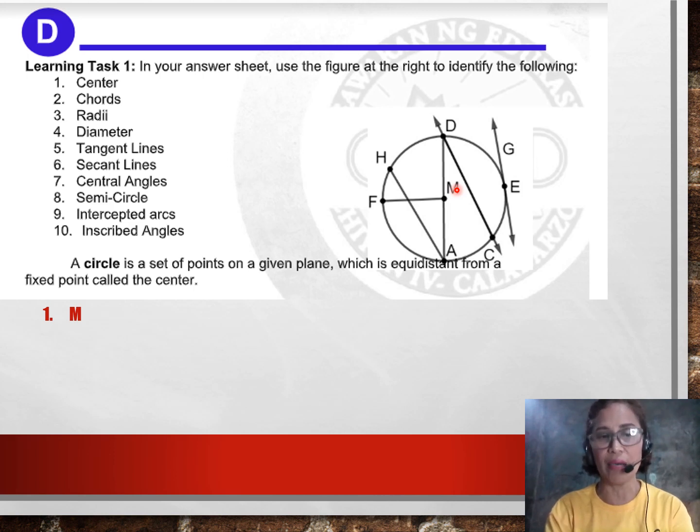You simply write capital M. Number 2, chords. There are actually 1, 2, and 3 chords of the circle. We have segment HA, segment TA, and segment DC. We have 3 answers. Number 3, radii. We have segment MD, segment MF, segment MA. We have 3 radii.